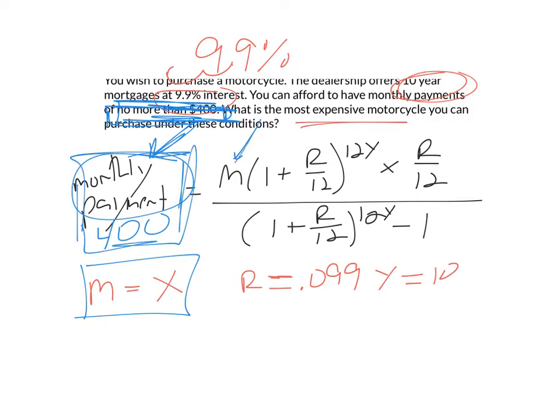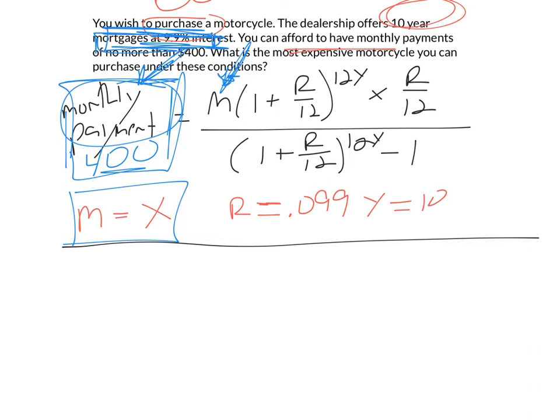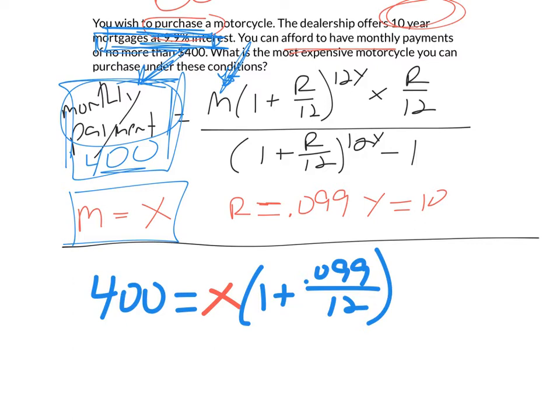And then that'll be the most amount of money I can spend on this motorcycle. So here I'm going to have the monthly payment, so that's going to be my $400. That equals M, so that's going to be my X value, times (1 + R/12), 0.099 over 12, raised to the 12Y power,